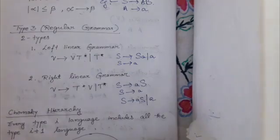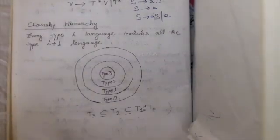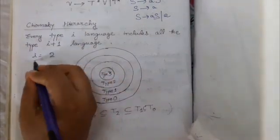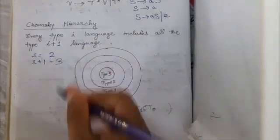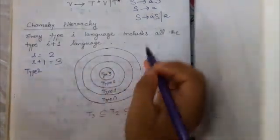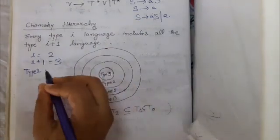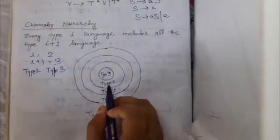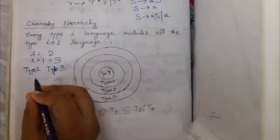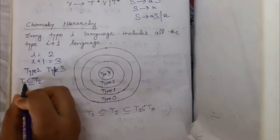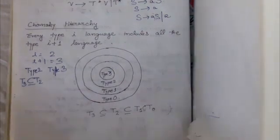The Chomsky hierarchy states that every Type i language includes all Type i+1 languages. For example, when i = 2, Type 2 language includes all Type 3 languages — meaning Type 2 is a superset of Type 3, and Type 3 is a subset of Type 2. When i = 1, Type 1 language includes all Type 2 languages.